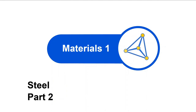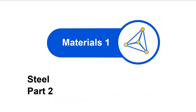Hi again, everyone. Welcome to part two of a lecture on steels. In part one, we looked at equilibrium forms of steels and related relative properties back to carbon content. In this part, we'll look at what happens when non-equilibrium conditions prevail.